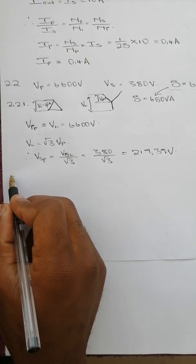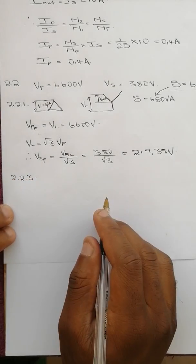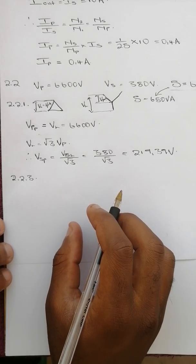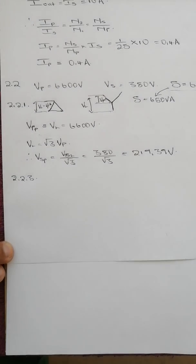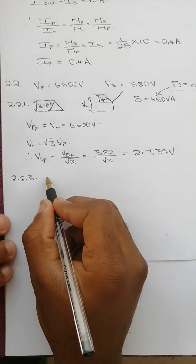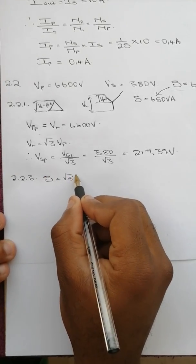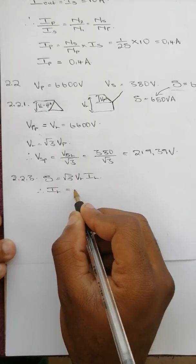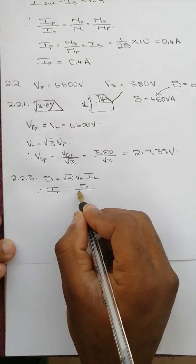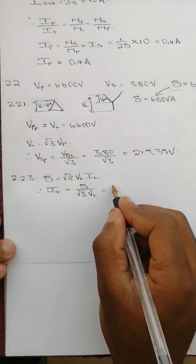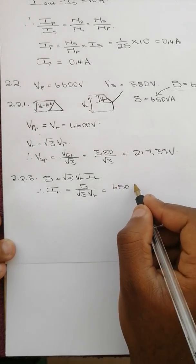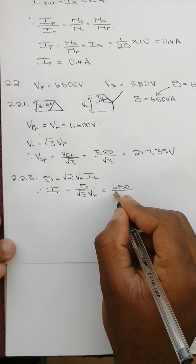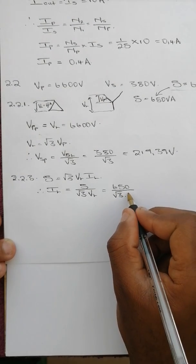Question 2.2.3: Calculate the secondary phase current. We use the formula S equals square root of 3 times V line times I line. Making I line the subject of the formula gives I line equals S over square root of 3 times V line. S is 650 volt-amps divided by square root of 3 and V line is 380 volts.